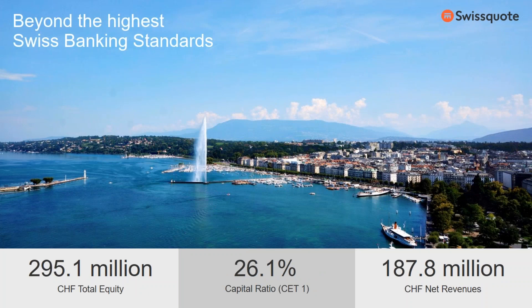Capital ratio is a measure of the bank's sovereignty — it measures the bank's capital against its assets. The average in Europe is around 11%, so you can understand from this 26% that we are a very solid group. In 2017, we had 295 million total equity, and we made 187.8 million in Swiss franc net revenues.